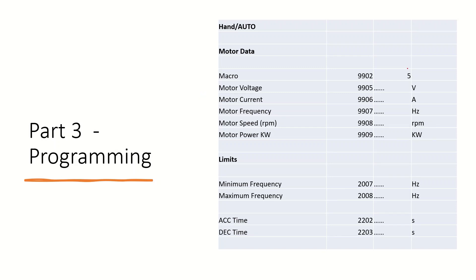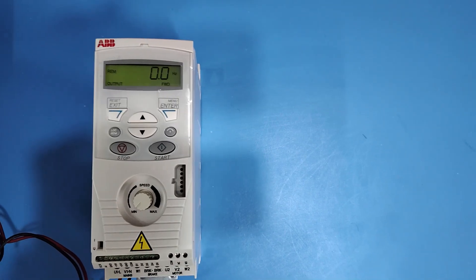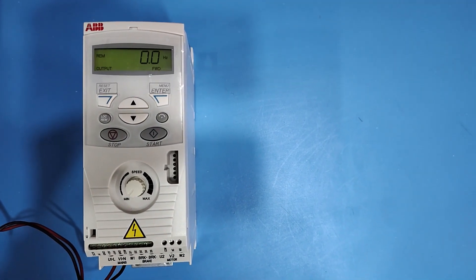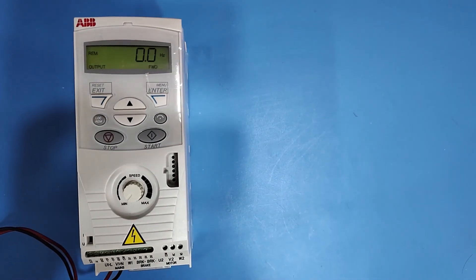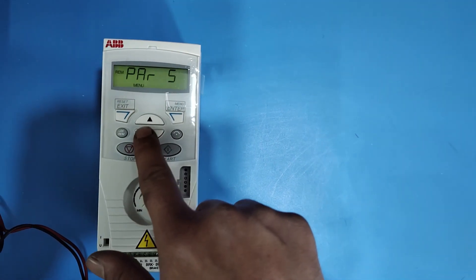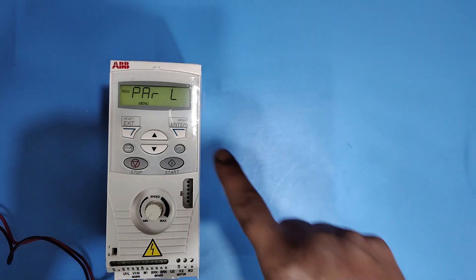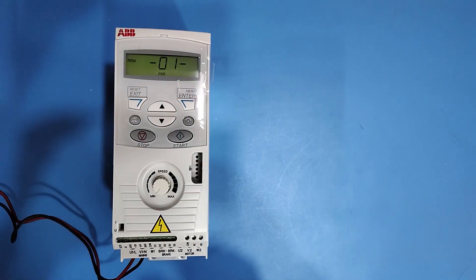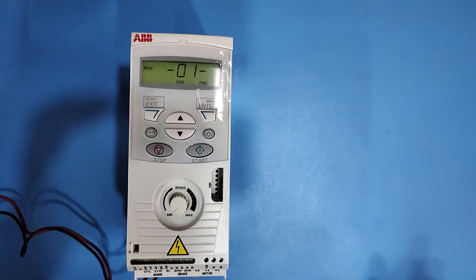First part is macro selection — how to program Hand Auto mode macro in the ABB ACS 150 drive. To set Hand Auto macro, press the Enter button, press the down button, and go to PARL. Press Enter once. Group 01 will show, then navigate to group number 99 by pressing the up or down key.